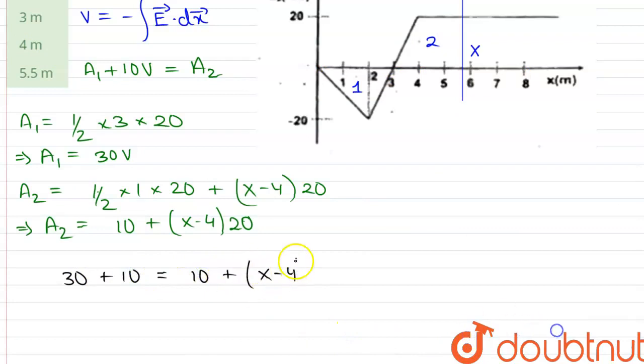And from here we find out that value of x is equals to 5.5. Therefore on calculation we can say that this is the answer and the correct option is option D. Thank you.